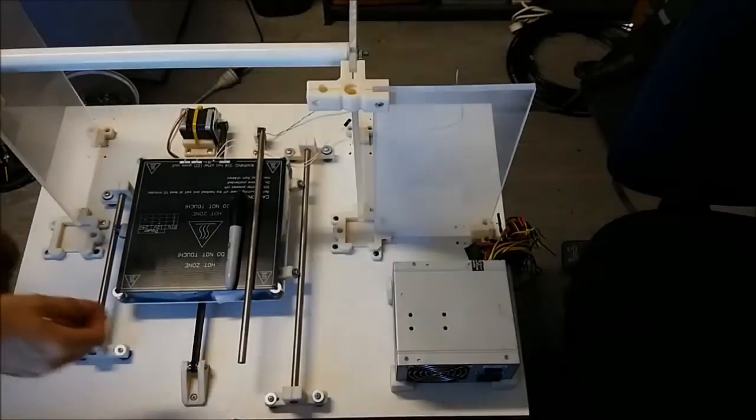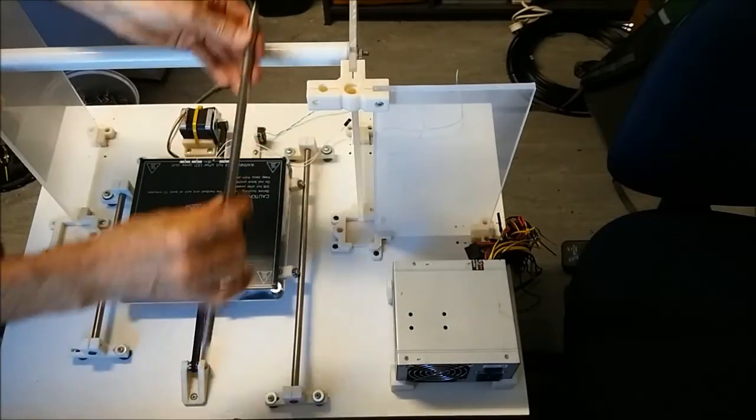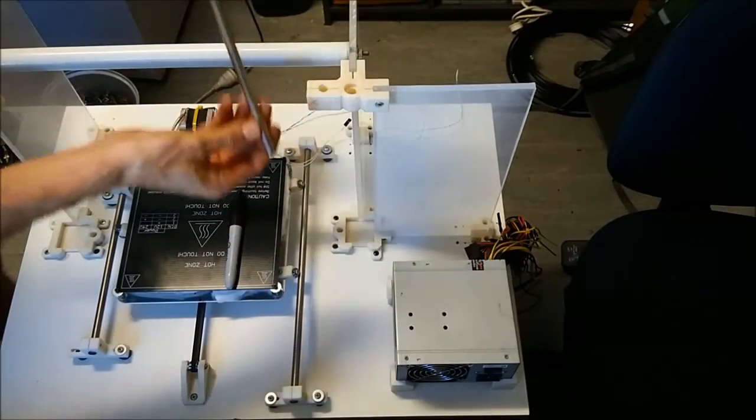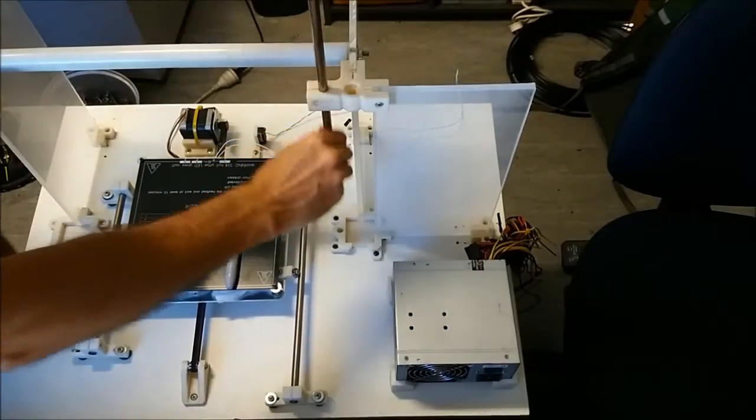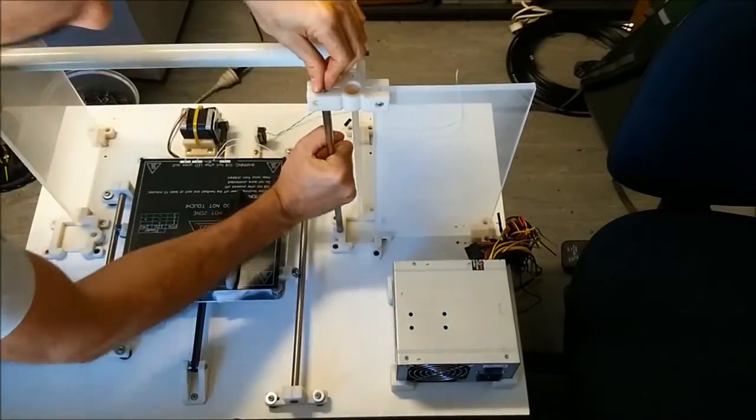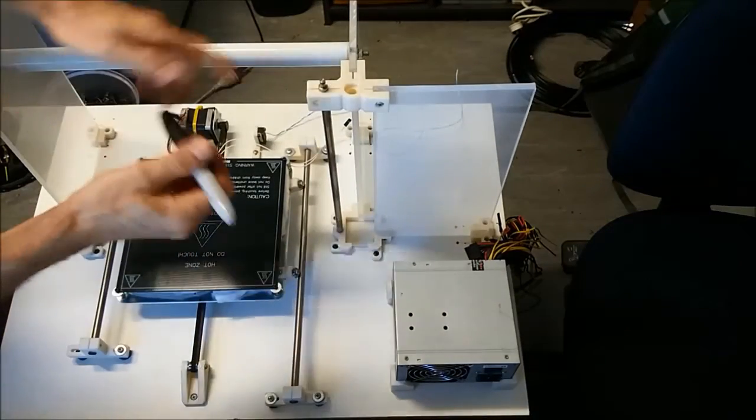Next we're going to install one of the Z-axes and cut it to length. I've just got my 10mm rod that we've just cleaned up. Just push it down into the printer, make sure it's hitting the base, and we'll just mark the top.